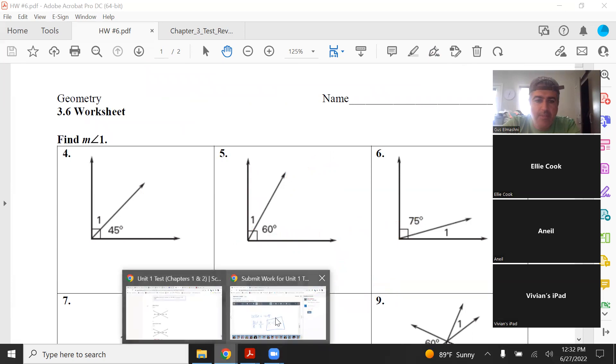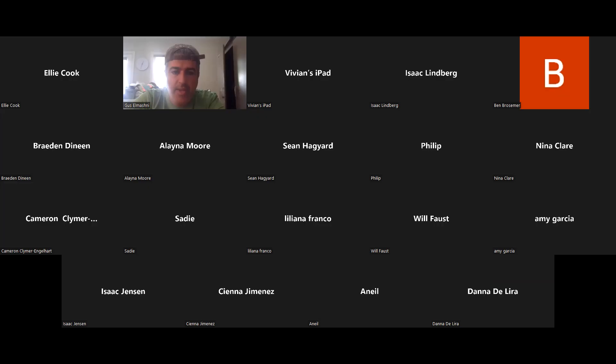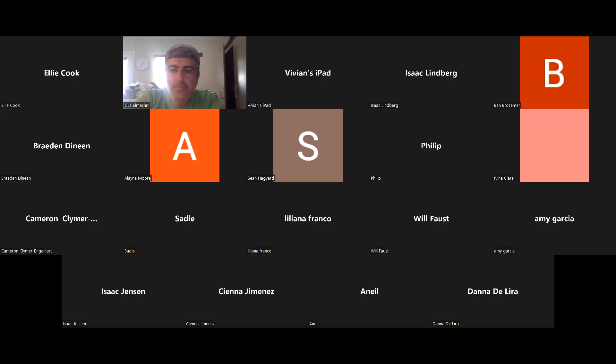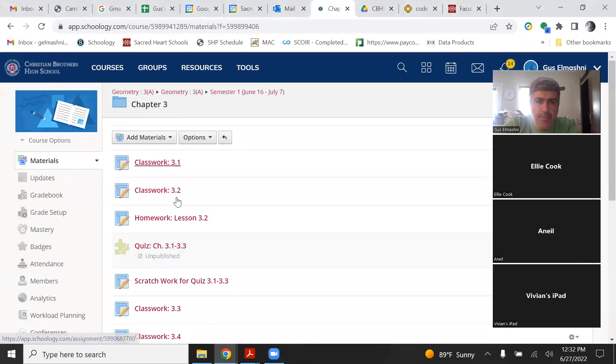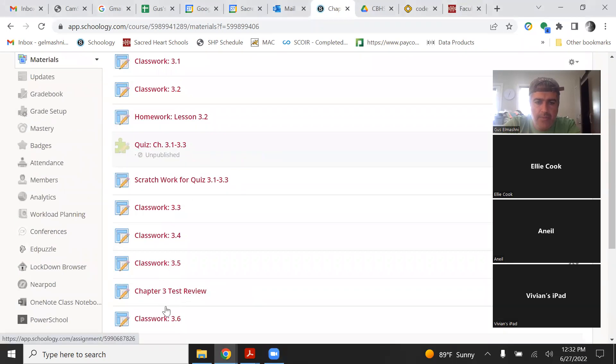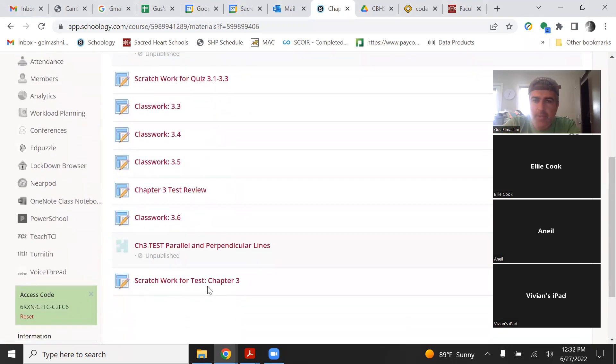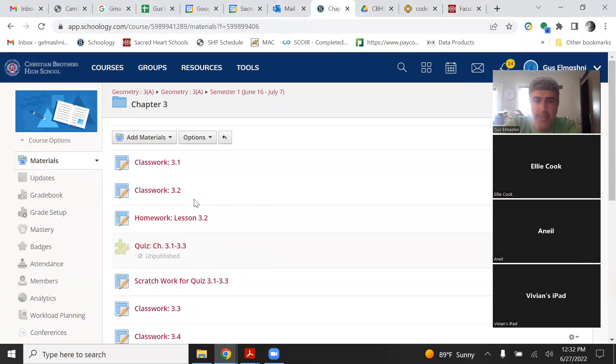You guys should have access to this. If you go to Chapter 3, it's right here, Classwork 3.6. You're going to work through that right now. In about 10 minutes, we'll check in to make sure it's going okay. There will be a homework assignment, the Chapter 3 Test Review. I'm going to make that assignment right now.